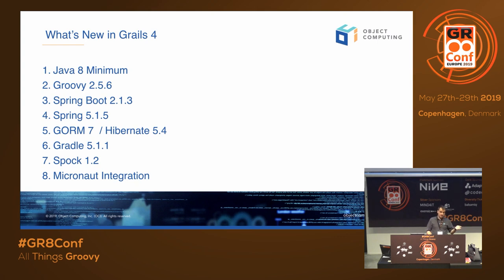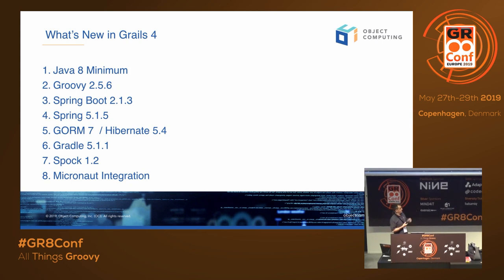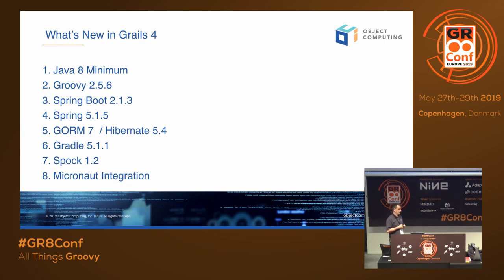Grails 3 applications use Gradle 3.5 by default, with unofficial support for Gradle 4. In Grails 4, when you create a new app, we are using Gradle 5.1.1. I don't see a major reason why you couldn't use the latest version of Gradle — I believe that's 5.4.1. We also upgraded the dependency to Spock and to the Micronaut integration, which I'll discuss more later.